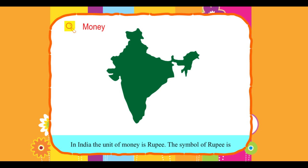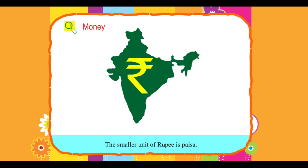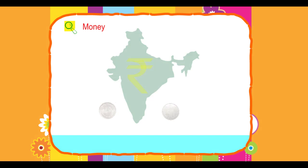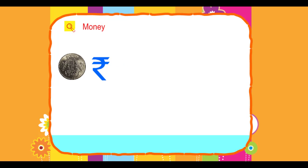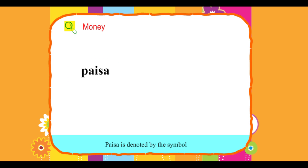Money. In India, the unit of money is rupee. The symbol of rupee is ₹. The smaller unit of rupee is paisa. One rupee equals hundred paisa. Paisa is denoted by the symbol P.